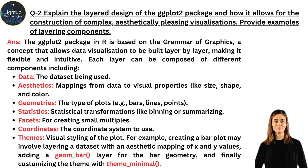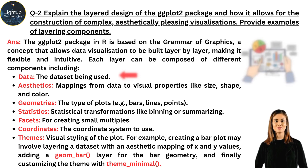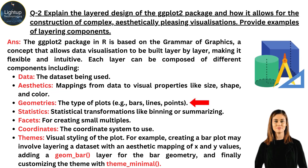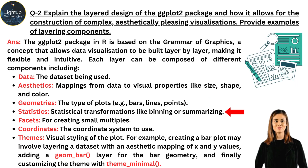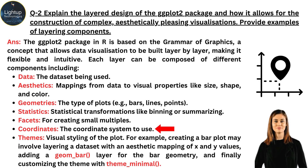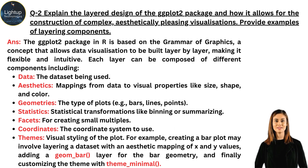Each layer can be composed of different components, including: Data — the dataset being used; Aesthetics — mappings from data to visual properties like size, shape, and color; Geometries — the type of plots, for example bars, lines, points; Statistics — statistical transformations like binning or summarizing; Facets — for creating small multiples; Coordinates — the coordinate system to use; and Themes — visual styling of the plot.